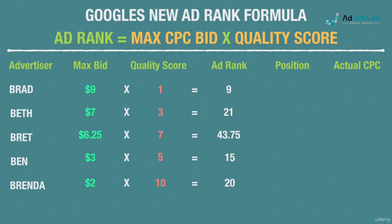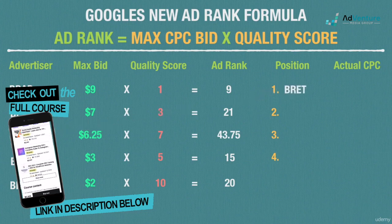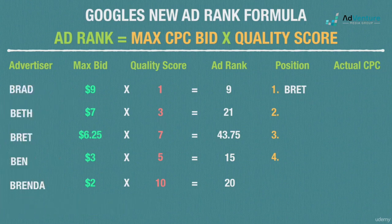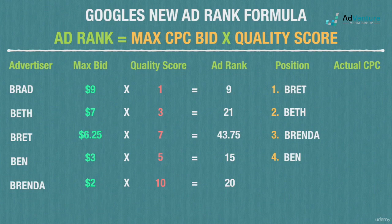Now that we've calculated the ad rank for each advertiser, we can determine their positions on the search results page. Remember, there are only four available ad slots. Brett wins the coveted top spot — even though two advertisers were willing to pay more than him — because he was serving a higher quality ad with his 7 quality score. Beth takes second, Brenda wins spot 3 with her high quality ad, and Ben wins spot 4. Brad, willing to pay $9 per click, gets snubbed altogether because his quality score was so low that his ad rank wound up being worse than everyone else's.